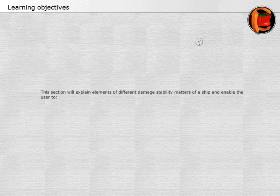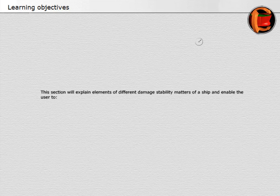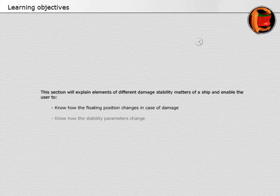This section will explain elements of different damage stability matters of a ship, and enable the user to know how the floating position changes in case of damage, and know how the stability parameters change.